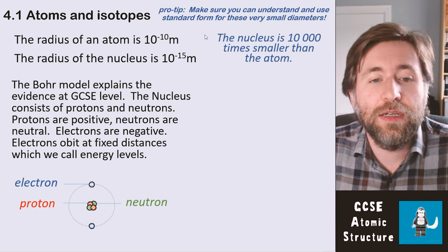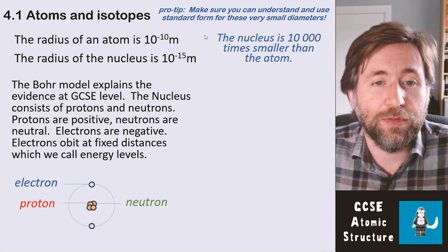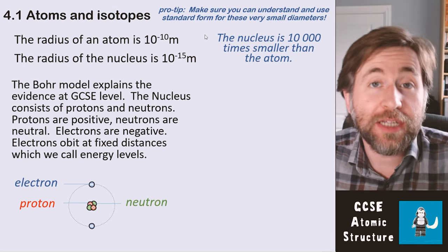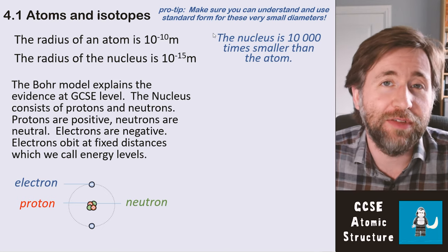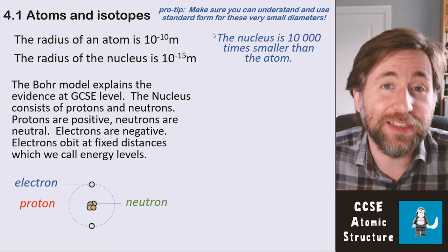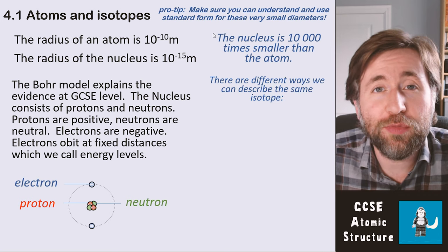Electrons are negative and they orbit the nucleus at fixed distances which we call energy levels. That's our model of the atom that we use all the time—called the Bohr model. That's our current best guess at what the atom is like and it fits all the evidence that we have and that we need to use at GCSE.